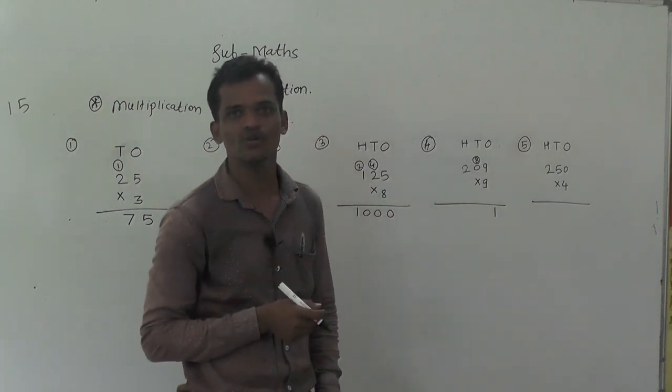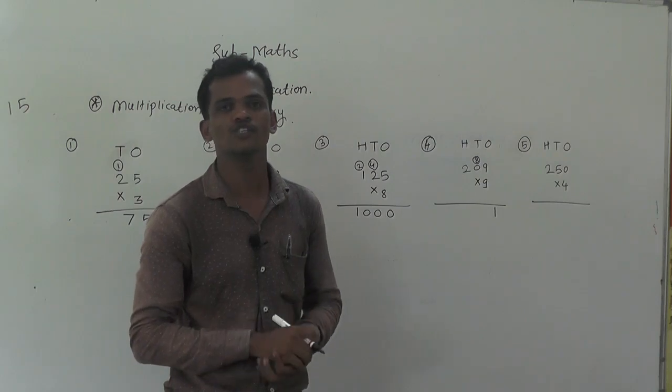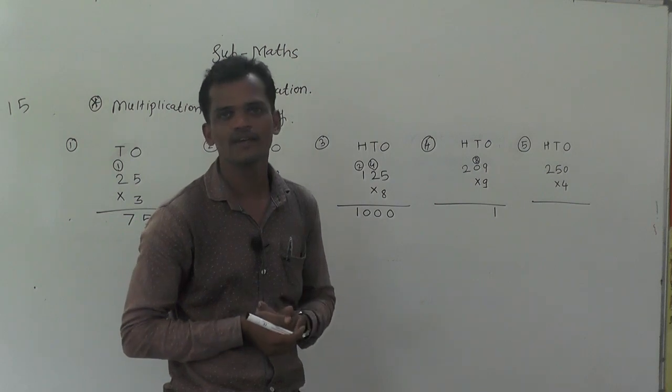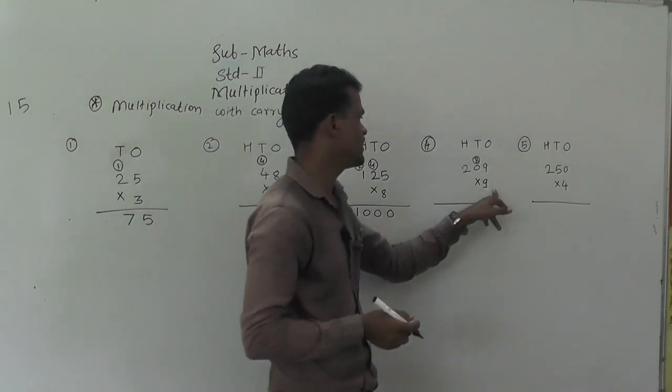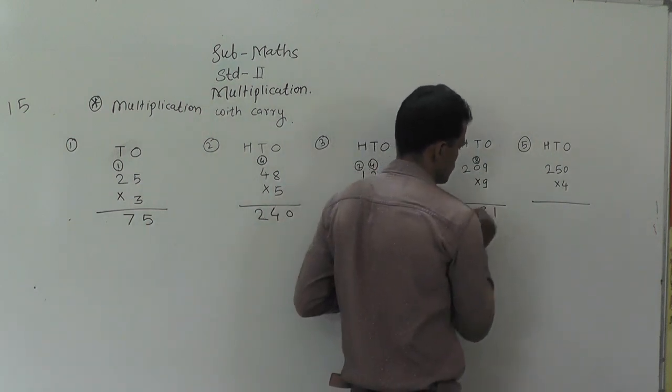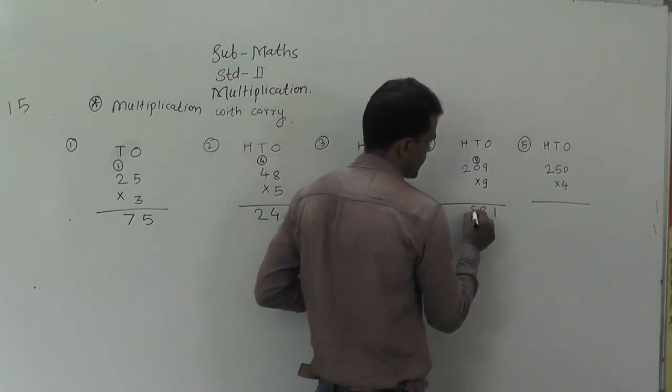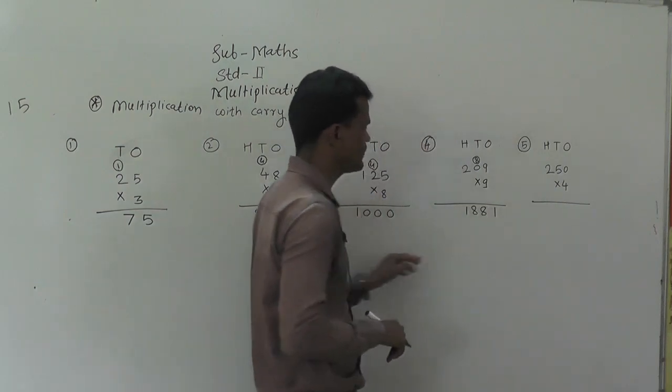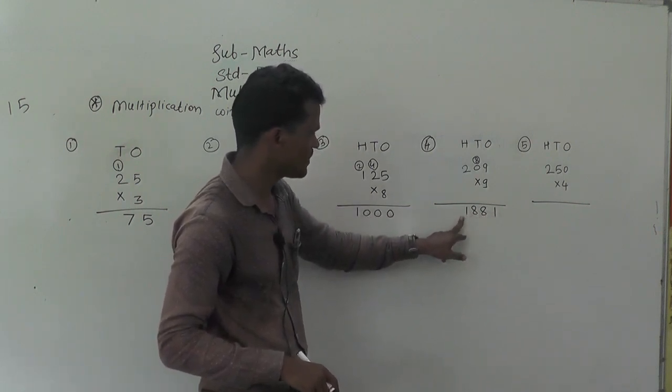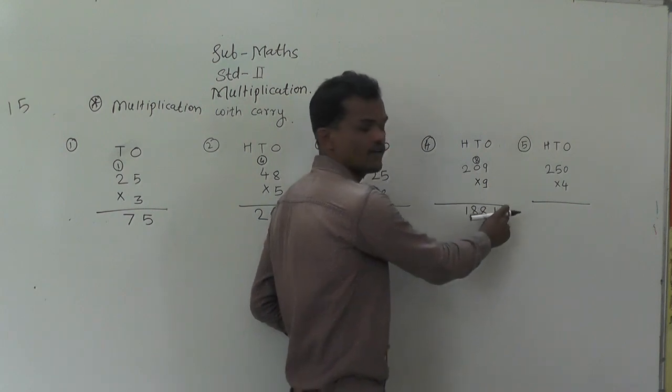We have learned the property of multiplication: any number times 0 is 0. Read this number: ones, tens, hundreds, thousands. The answer is 981.